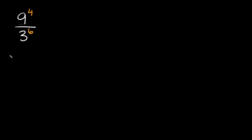The way you do that — notice in this problem we have a 3 on the bottom and a 9 on top. We can do something clever here. This 9, we can rewrite it as 3 squared, because 9 is equal to 3 squared. If we do that, we'll have the same base — a 3 there and a 3 there — so the bases match up and we can divide or simplify these exponents like normal.